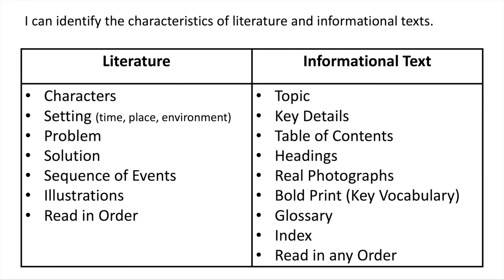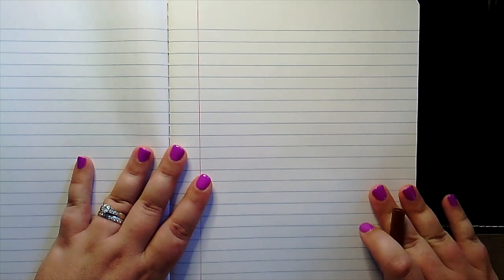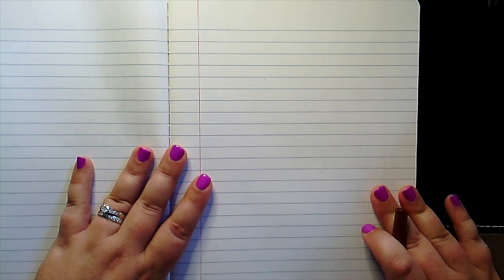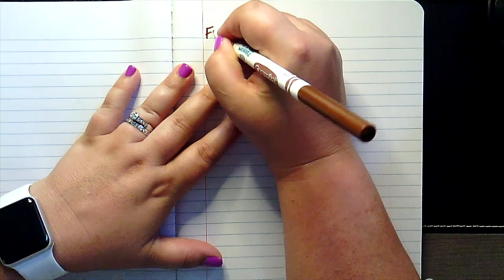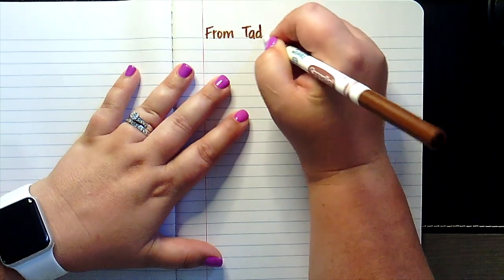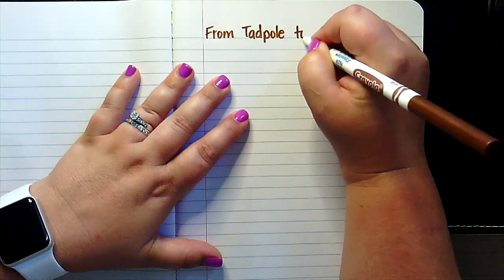Today's reader response is going to be taking a moment to draw a picture of something from our text that shows that it was an informational text. Let's take a look at Mrs. King's reader response journal to see an example of how we can prove that today's text was an informational text. Here's Mrs. King's reader response journal. Today we're going to be showing how we know that books like From Tadpole to Frog are informational texts. The first thing I'm going to do is write my title at the top of my page: From Tadpole to Frog.